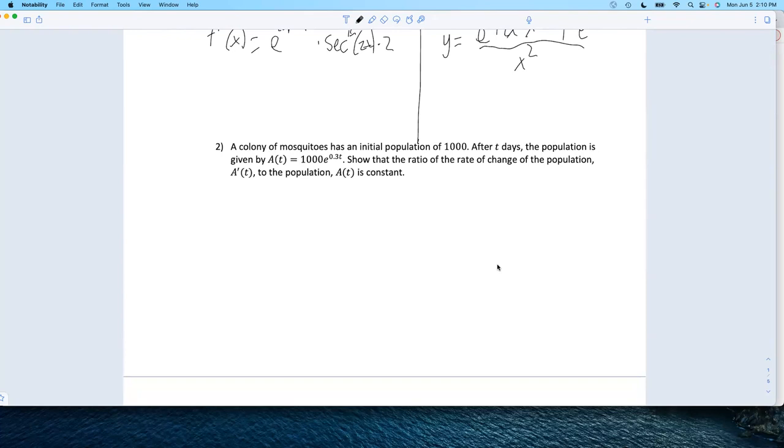Why is e to the x so important? Because it models so many natural phenomena. So many things in the real world can be modeled by some exponential function. And the classic example of that is exponential growth.